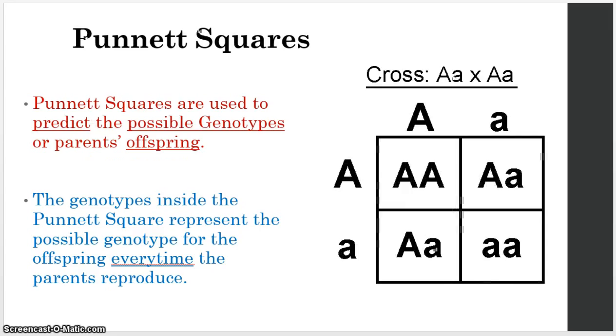Alright. So let's talk about Punnett squares real quick. You need to know how to fill in a Punnett square. You also need to know what a Punnett square is for. Punnett squares are used to predict the possible genotypes of a parent's offspring. So what that means is that these letters in here are a prediction of what the parent's offspring's genotype might look like.